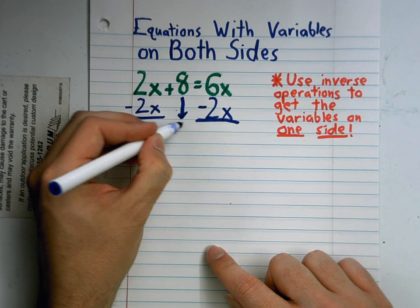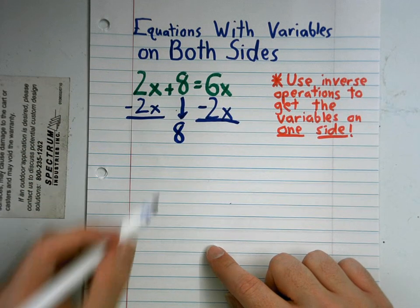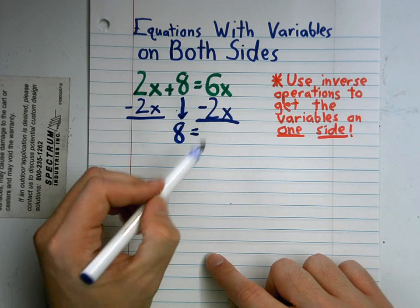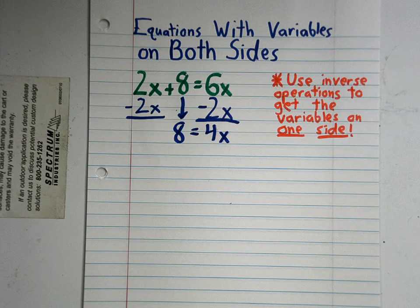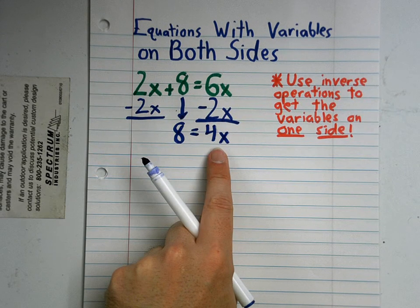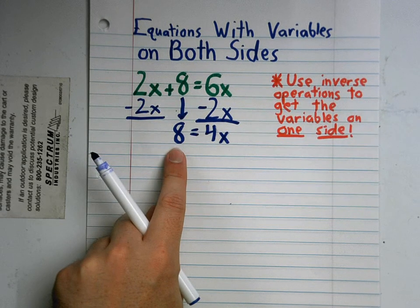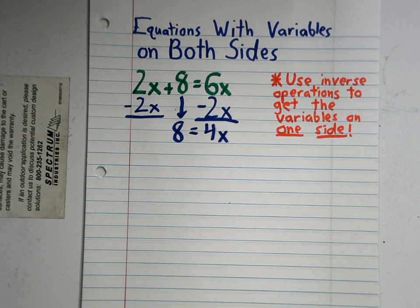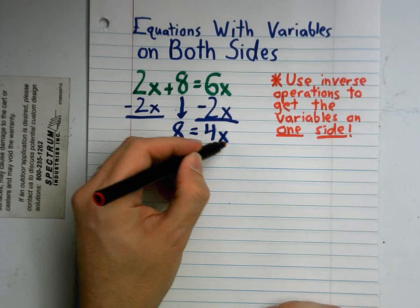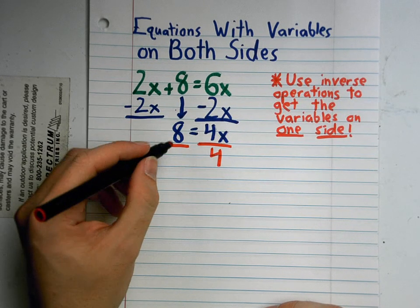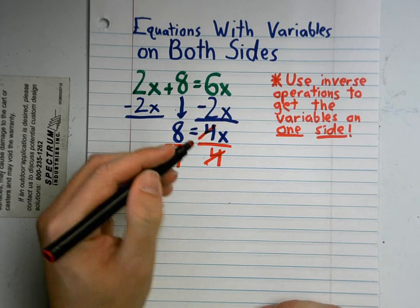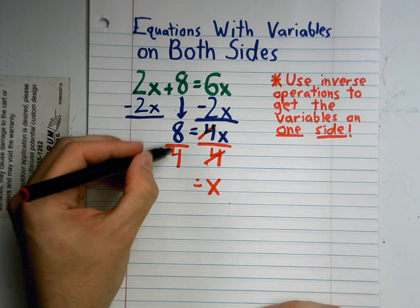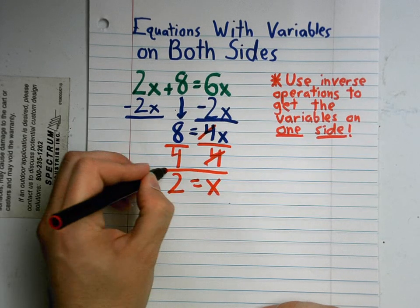I'm going to bring down my 8 because it's left over. Then 6x minus 2x — we know from combining like terms that that is 4x. Now we have all of our variables on the right-hand side of the equation and all of our constants on the other side. 4 times x equals 8, so we're going to divide by 4. The inverse operation of multiplication is division. 4x divided by 4 is just x, and 8 divided by 4 is 2. So x equals 2.